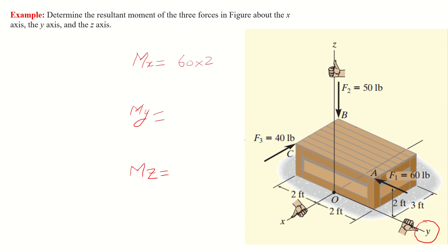Then we look at F2, which is 50 pounds directed in the z-direction. It has a perpendicular distance in the y-direction equal to 2, so its contribution is 50 multiplied by 2. The moment about the x-axis is therefore equal to 220, anti-clockwise, because it carries a positive sign.